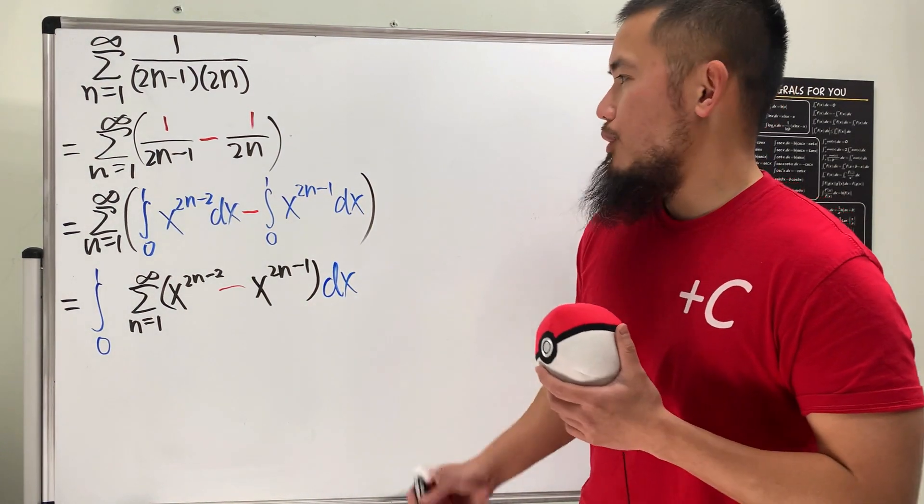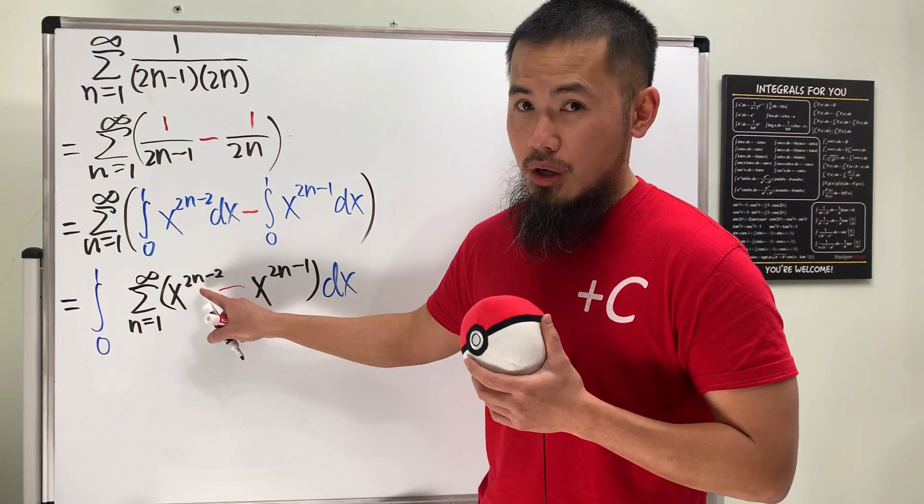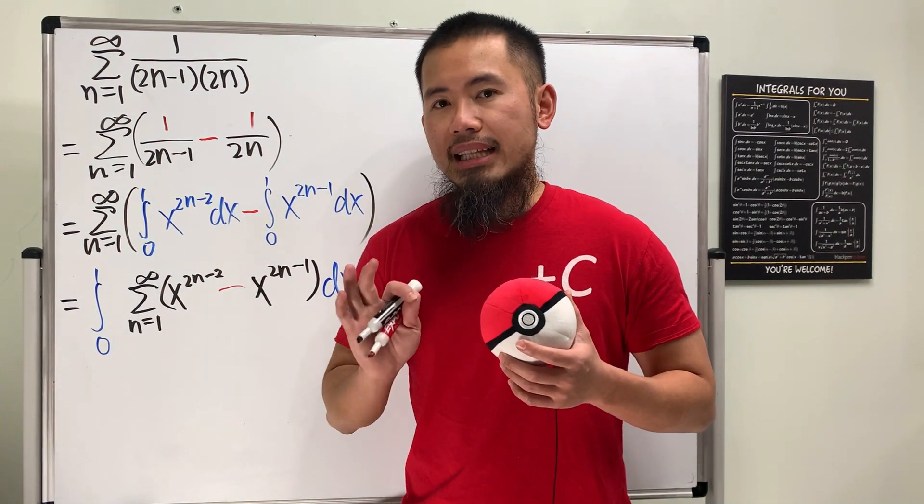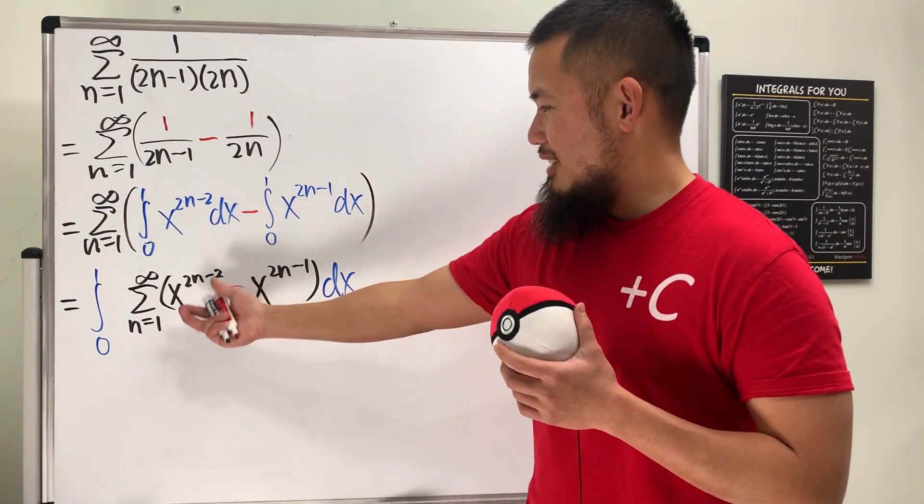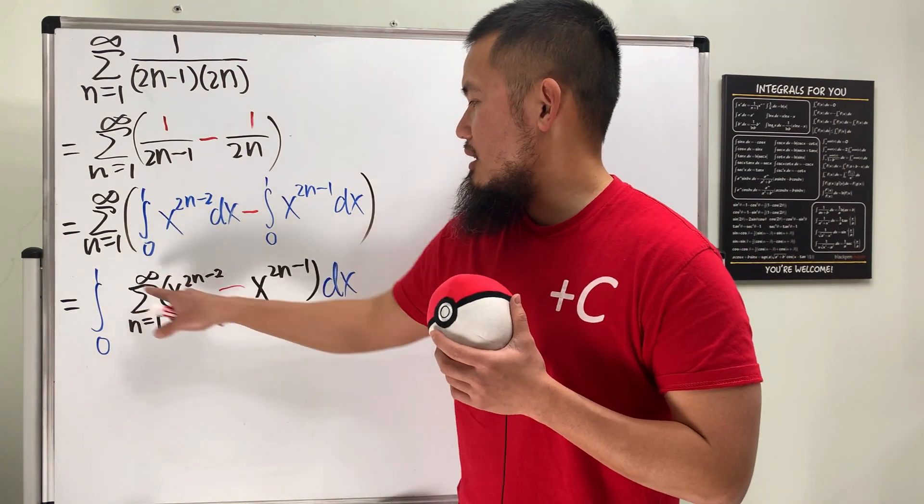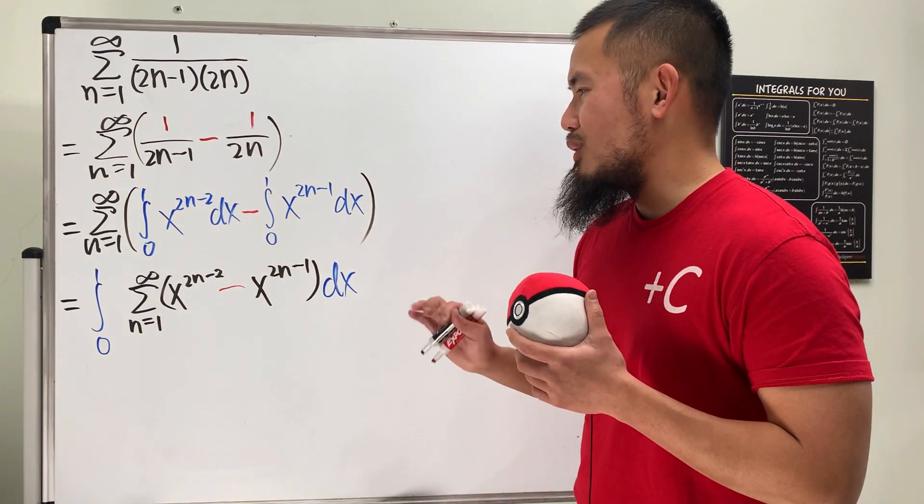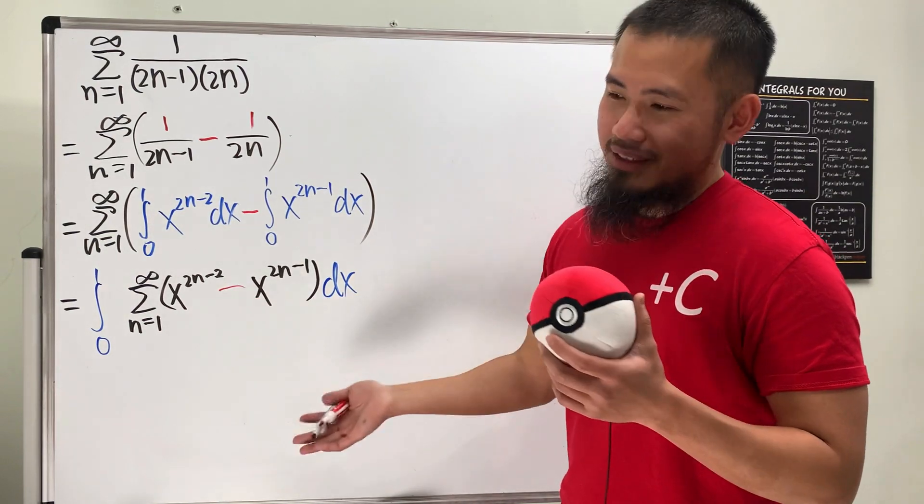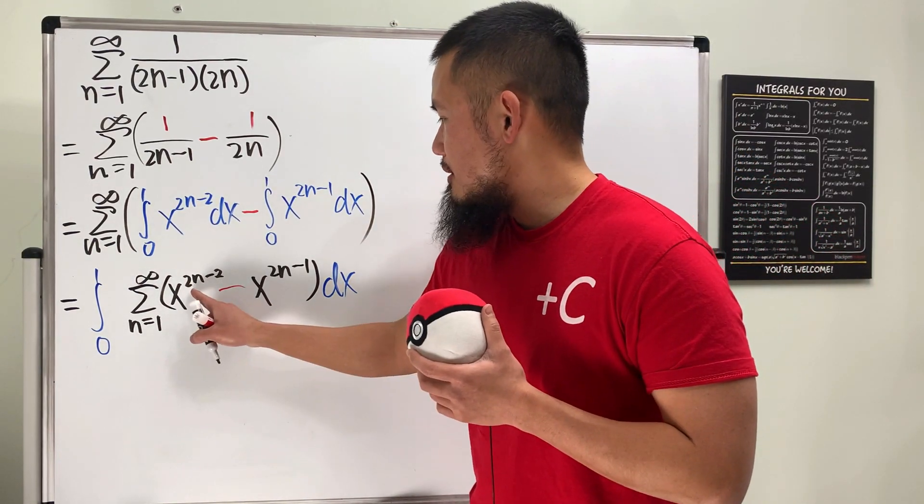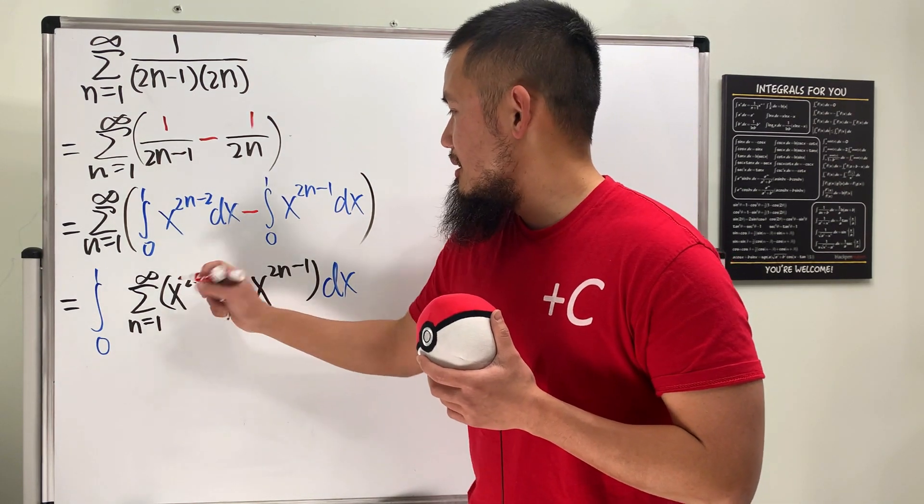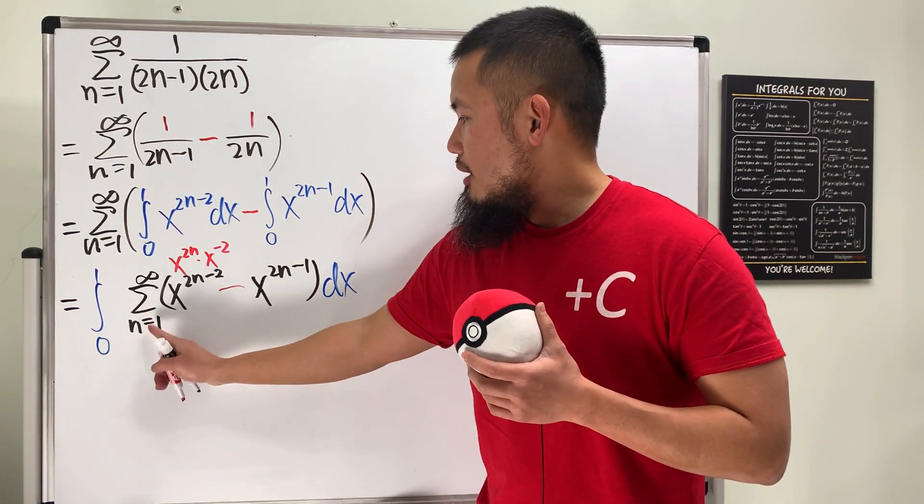So here we have the integral going from 0 to 1. I will do the summation of this guy. So let me just write down the summation of n goes from 1 to infinity of x to the 2n-2, and then we will have to subtract, and this right here is x to the 2n-1. And pay close attention, we will switch the order, and now we will have to put on the dx right here. So this is pretty good.